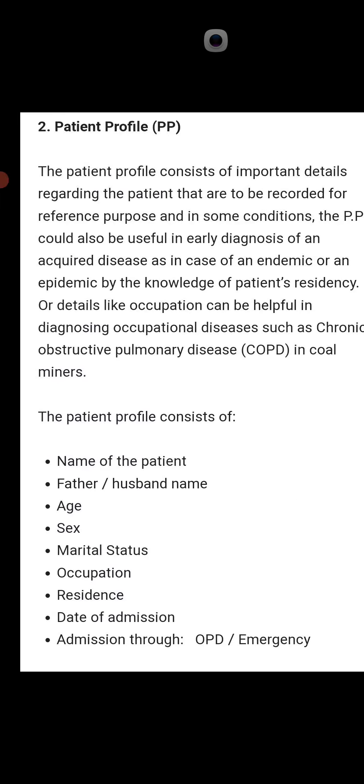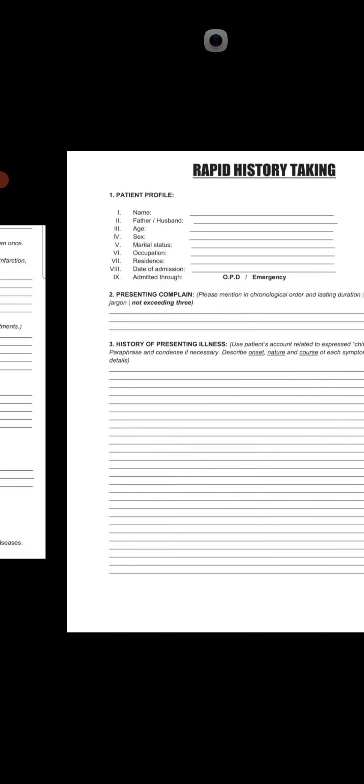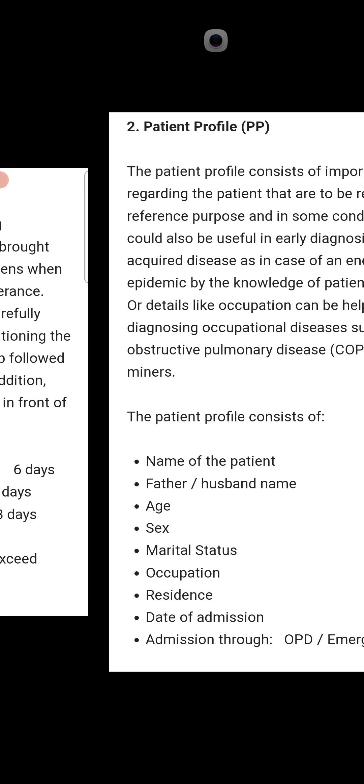The third step in the rapid history taking sheet is the history of presenting illness — meaning how long the patient has suffered from this illness. Use the patient's account to express the chief complaint. In the history of present illness we elaborate the chief complaint and ask questions from the patient. We describe the onset, nature, and course of each symptom, and we should avoid irrelevant detail.